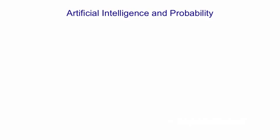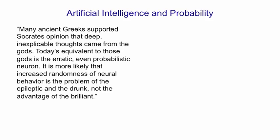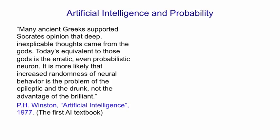So here's a quote to help you. Many ancient Greeks supported Socrates' opinion that deep, inexplicable thoughts came from the gods. Today's equivalent to those gods is the erratic, even probabilistic, neuron. It is more likely that increased randomness of neural behaviour is the problem of the epileptic and the drunk, not the advantage of the brilliant. That was in Patrick Henry Winston's first AI textbook in the first edition, and it was the general opinion at the time. Winston was to become the leader of the MIT AI lab.